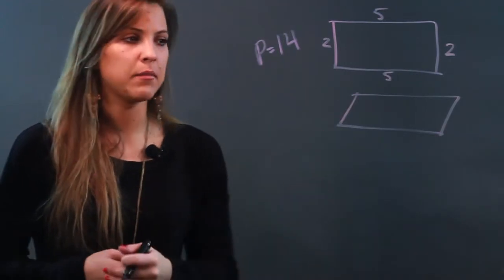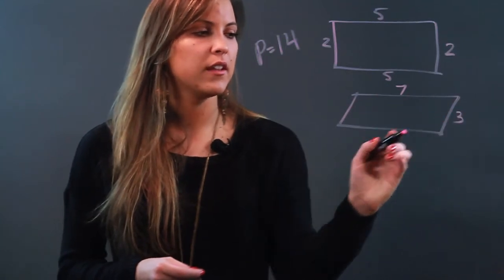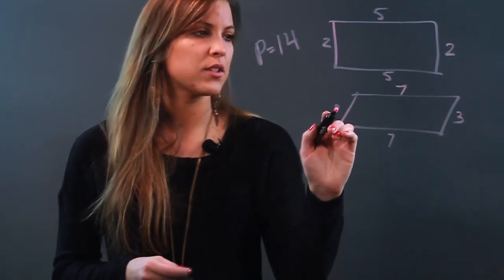And we're going to do the same thing for a parallelogram because again opposite sides are equal. So if this was 7 and this was 3, then this is also 7 and this is also 3.